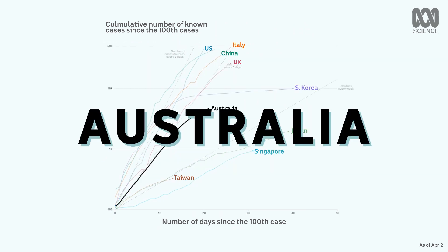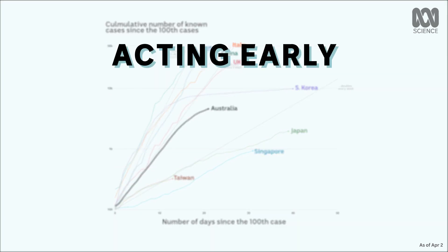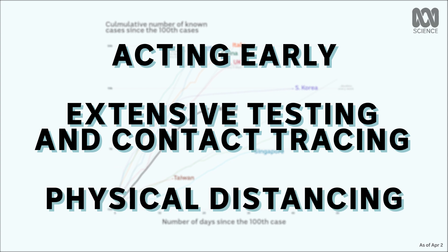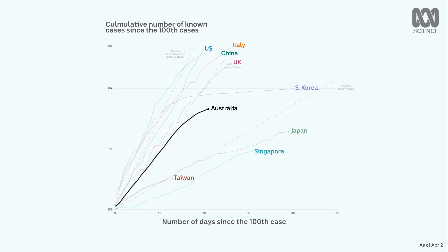So what can Australia take from this? Around the world, there are three strategies that seem to be working: acting early, extensive testing and contact tracing, and physical distancing. By far, the most important measure for individual Australians is to drastically reduce the contact they have with other people. Until a vaccine or treatment is found, there isn't going to be a solution that will allow us to relax.